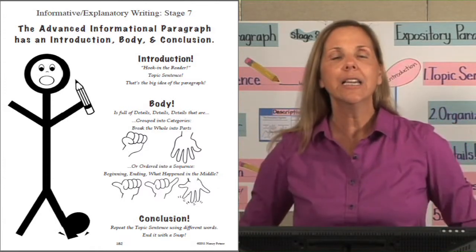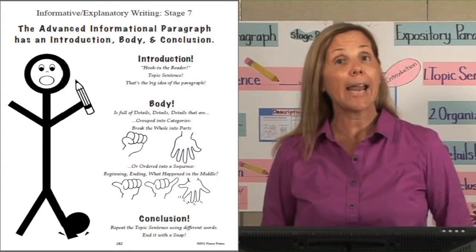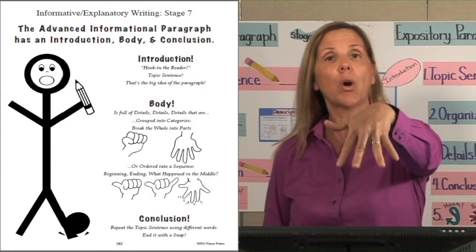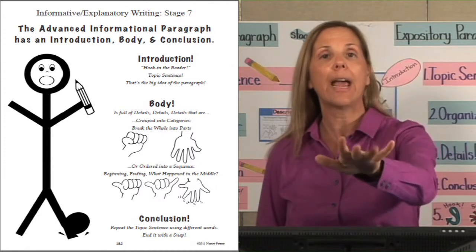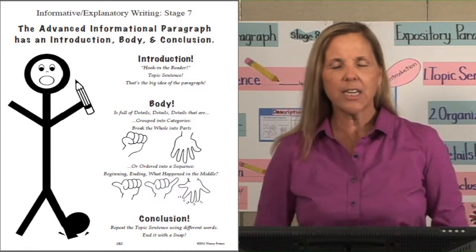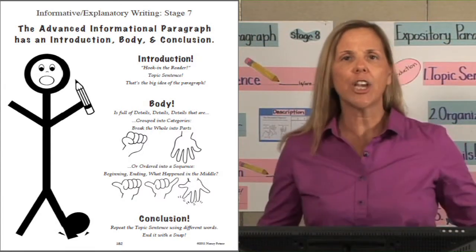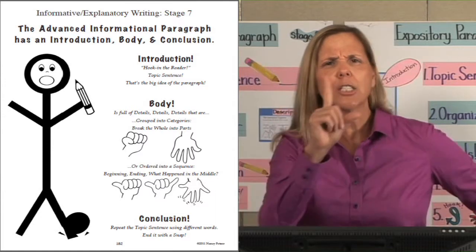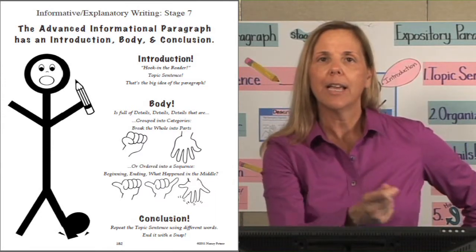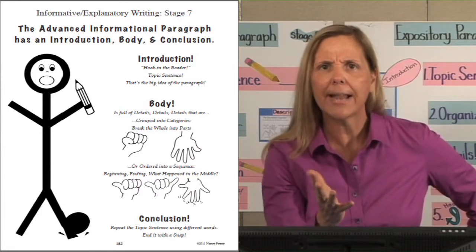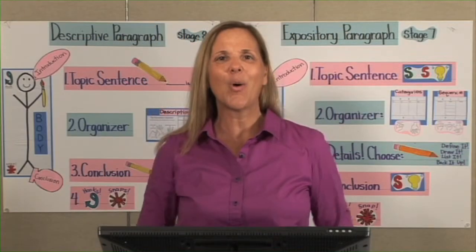The body is full of details, details, details that can be categorized, whole to part, or sequenced—beginning, end, what happened in the middle. All these details need to tell about the big idea. For the conclusion, repeat that topic sentence but use different words, and end it with a snap—that means end it with something that makes the information matter. An advanced paragraph has an introduction, a body, and a conclusion.